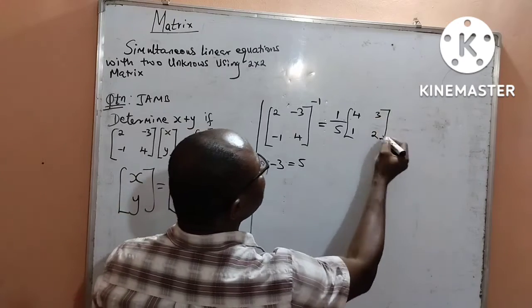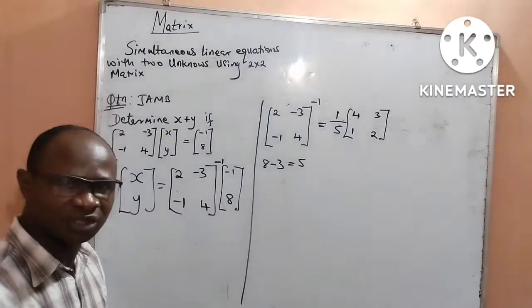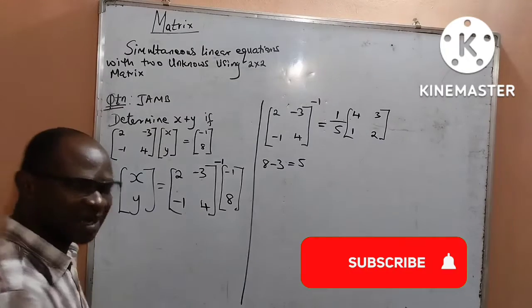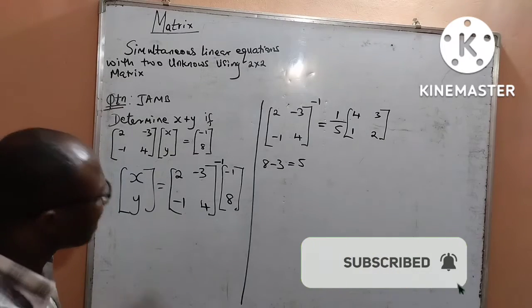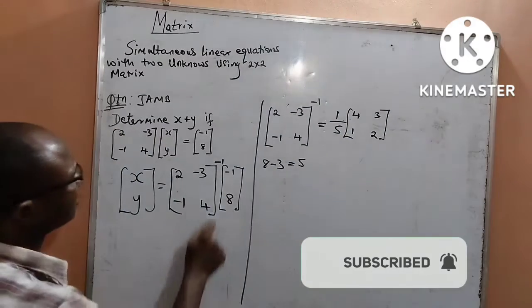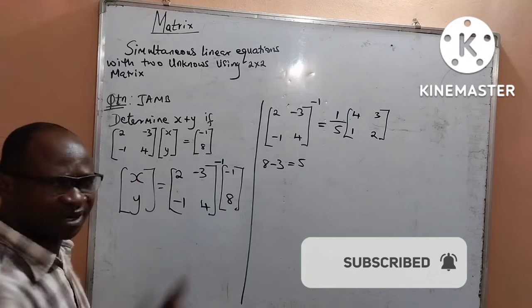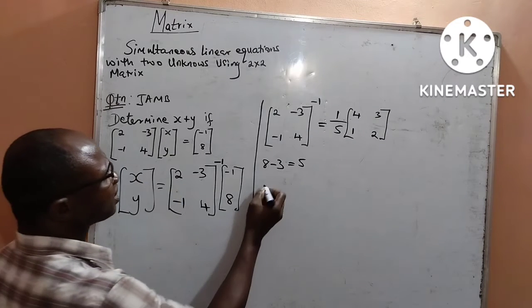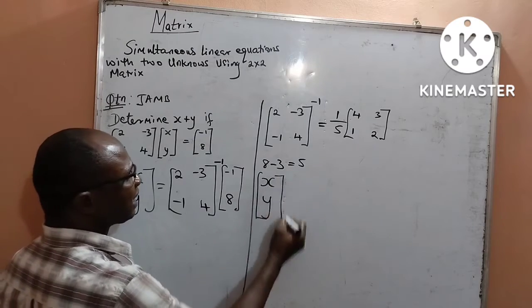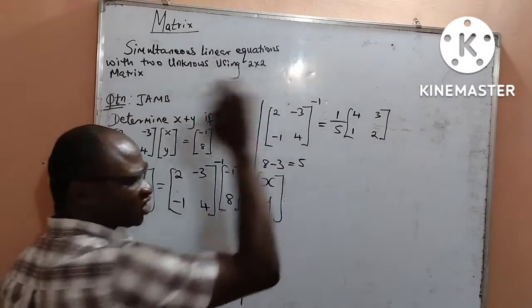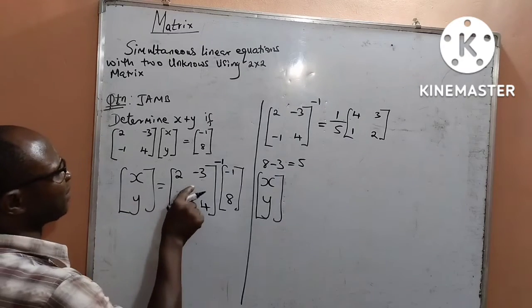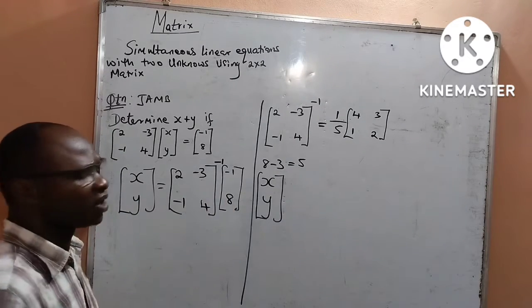What I have now is called the inverse matrix. Now, I am going to use this result to multiply this 2 by 1 matrix. Looking for x and y, I can now multiply the result of the 2 by 2 matrix with the 2 by 1.